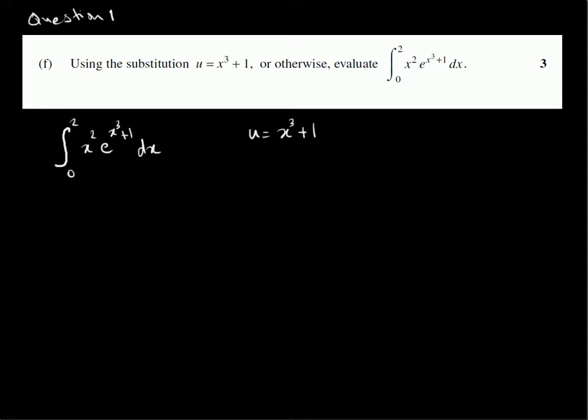Now, first of all, let's change these limits, x equals 0 and x equals 2, in terms of u. So, if x equals 0, u equals 0 cubed plus 1, which is 1. And if x equals 2, then u equals 2 cubed plus 1, which is 8 plus 1, which is 9.